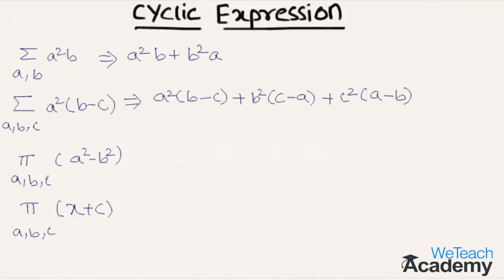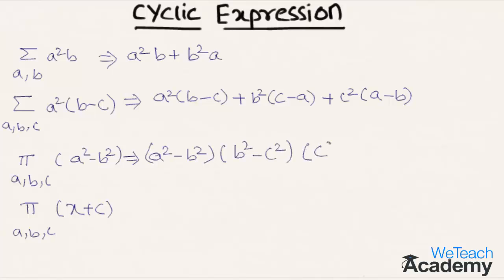The third example is pi a, b, c of a square minus b square. This can be written as a square minus b square, into b square minus c square, into c square minus a square.